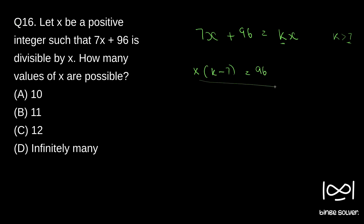This is the condition that is given. Since x is a positive integer, k will be greater than 7. The smallest value k can take is k equal to 8. When k equals 8, x will be 96. So the largest value x can take is 96. For all other values we can find k such that if x divides 96 this equation will be satisfied.